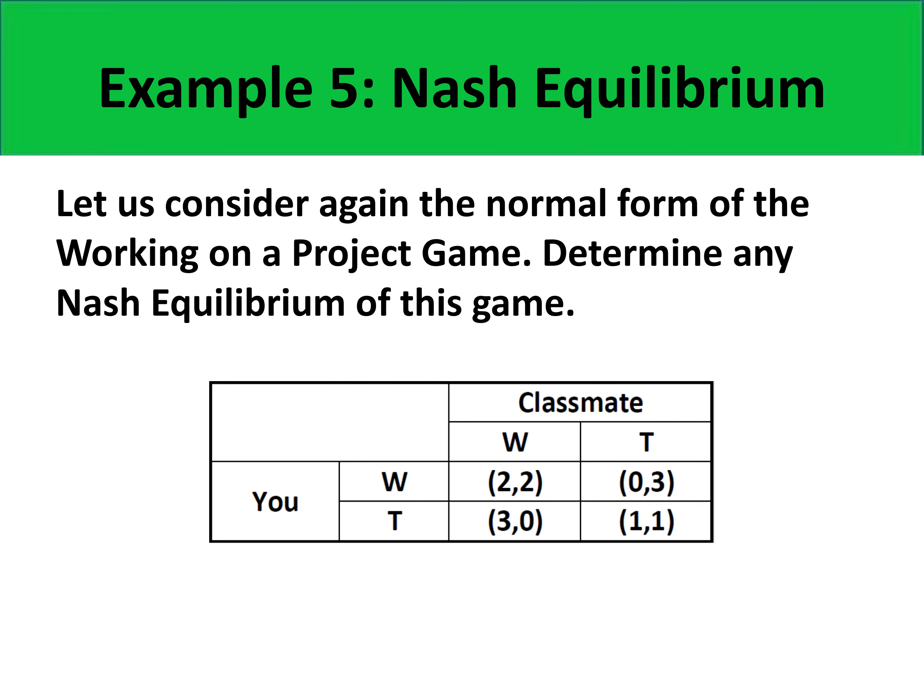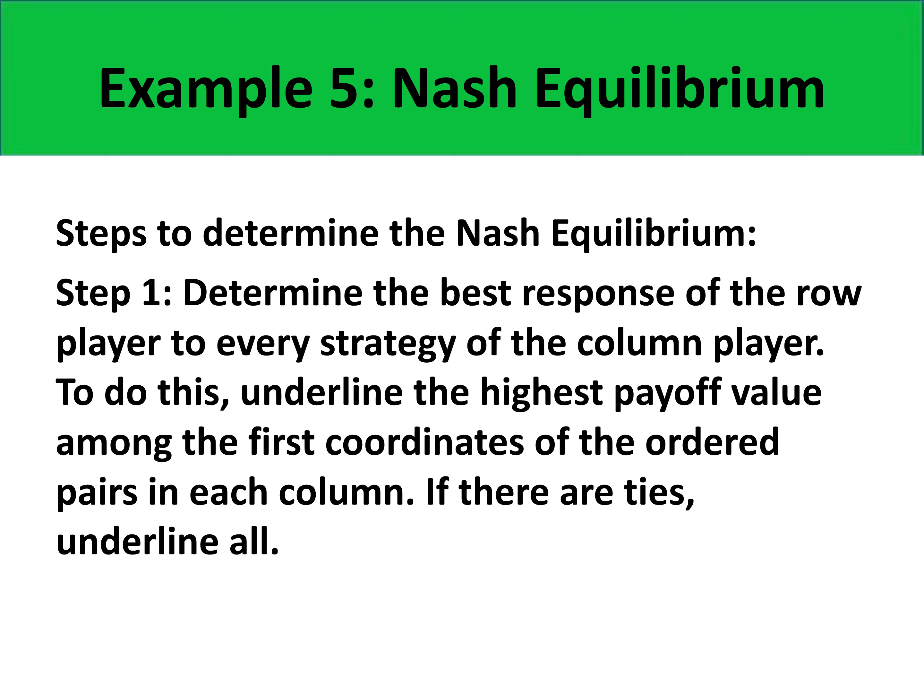Let us discuss the Nash Equilibrium using an example. Let us consider again the normal form of the working on a project game, which was discussed in the previous video, and let us determine any Nash Equilibrium of this game. Recall that each of the players has two strategies: either to work hard or to take it easy. The payoff values represent happiness levels or satisfaction levels. So if the row player would work hard and the column player would take it easy, the row player would get zero and the column player would get three. In the Nash Equilibrium, each player should always have a counterattack to whatever strategy thrown in by the opponent.